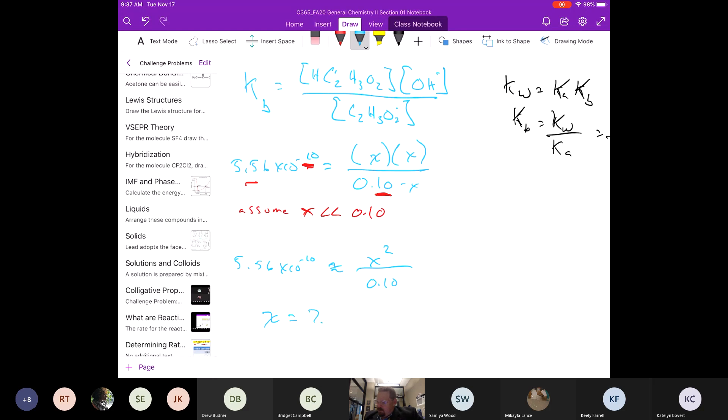So we can then solve for X. X from this is going to be 7.46 times 10 to the negative 6th molar.